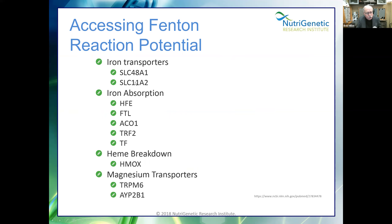There are times when iron supplementation is needed, and times when it can be the worst thing you've done. We have to be very aware of when the right time is to give iron, because if iron is low because the Fenton reaction is occurring, you can be pouring gas on the fire. There are iron transporters and iron absorption genes to consider. Heme needs to be broken down by the HMOX enzyme and put into ferritin. Magnesium is also critical inside the cell, and excess iron may inhibit magnesium.